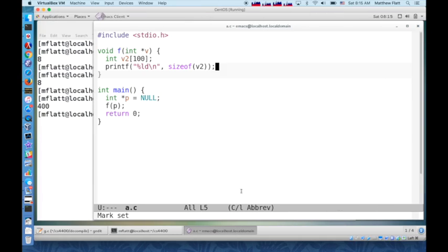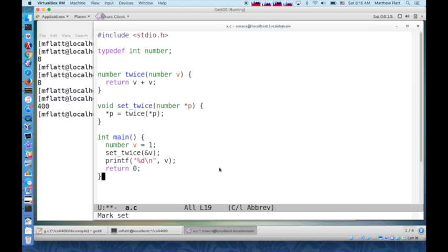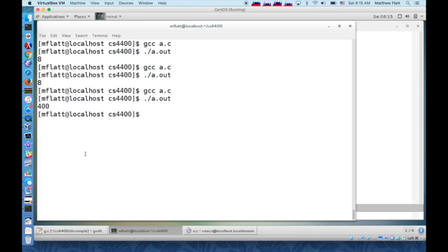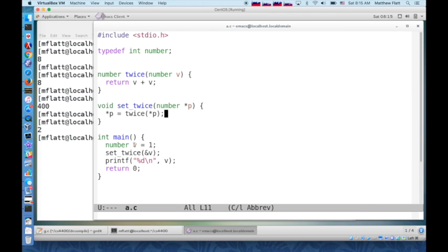So we can copy that over and try it out. And it works the way you expect. 2 is printed out because we declared a local number, initialized it to one, and called set_twice on it.